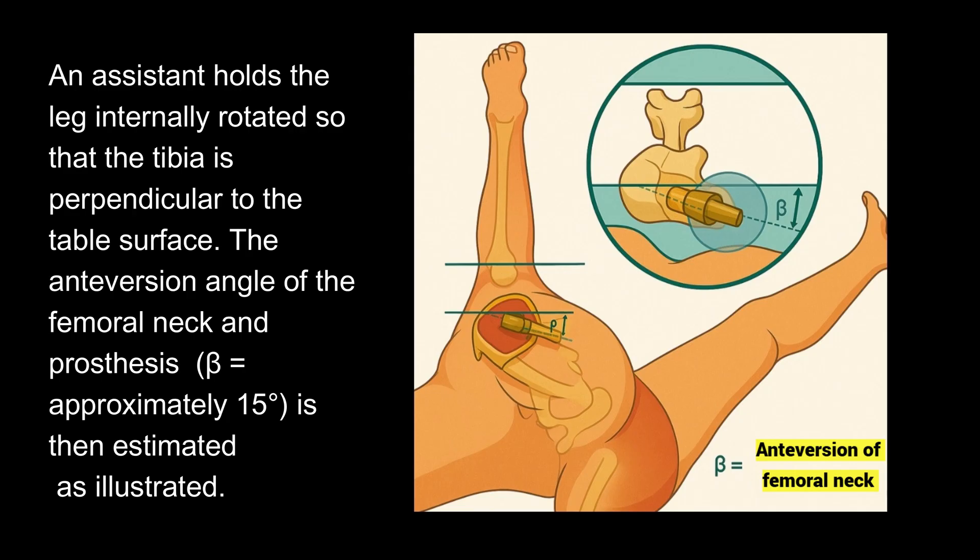The antiversion angle of the femoral neck and prosthesis — beta — equals approximately 15 degrees, and is then estimated as illustrated.